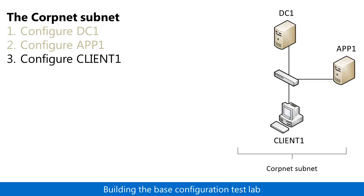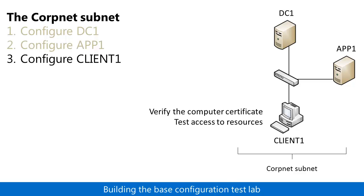In Step 3, you add the computer named Client1 and join it to the corp.contoso.com domain. You then verify that a computer certificate was installed, and test access to the web and file share resources on App1.